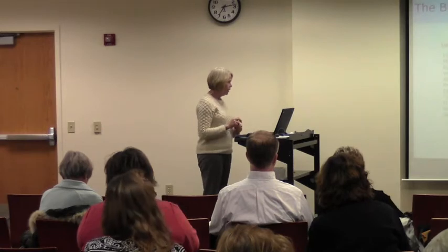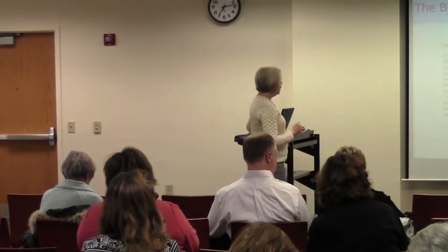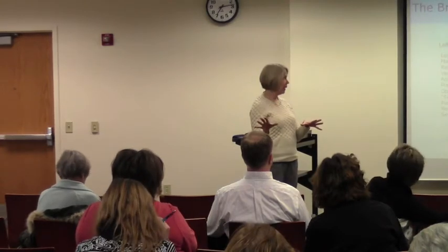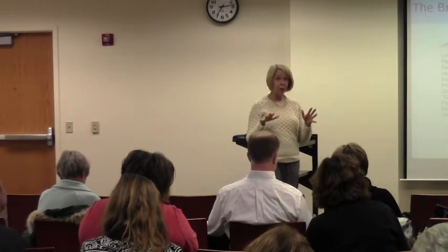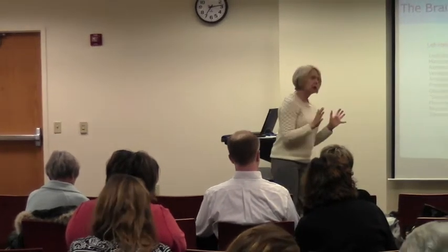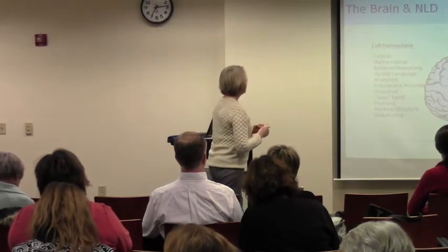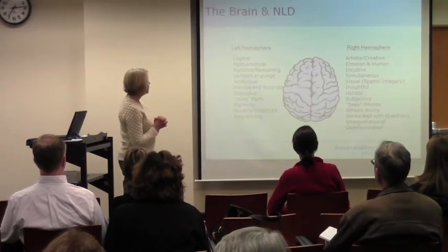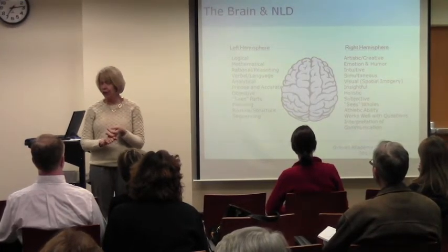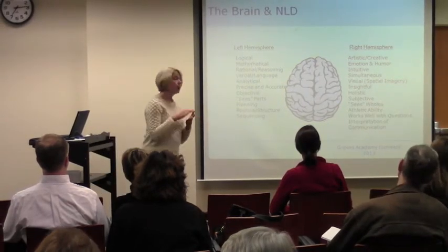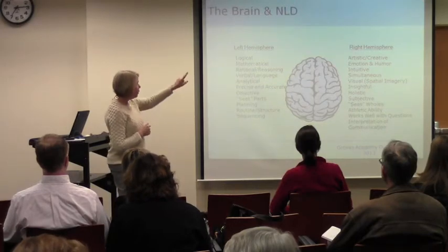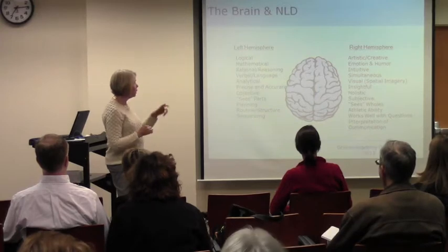I promised this is the only picture of the brain I will show you tonight — I can't seem to do any presentation anymore without showing brains. Basically, the human brain is divided into hemispheres: a right hemisphere and a left hemisphere. The left hemisphere is the area of the brain where neural networks tend to process logic, language, reason, analytical thinking, precision, planning, routines, and sequencing.